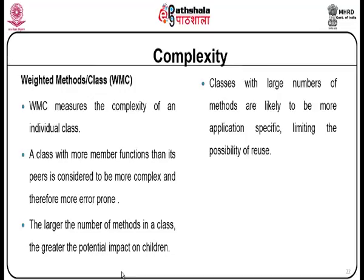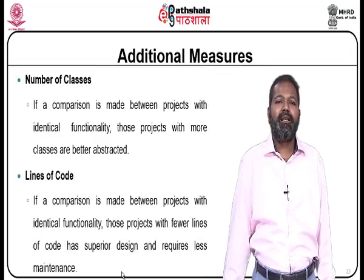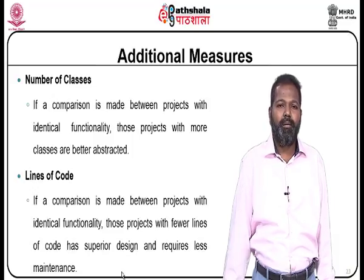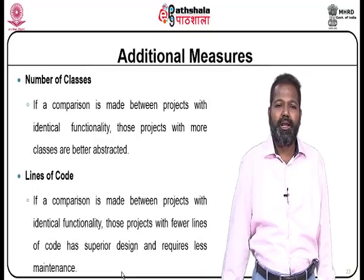The larger the number of methods in a class, the greater the potential impact on children. Classes with large numbers of methods are likely to be more application-specific, limiting the probability of reuse. Additional measures: number of classes — if a comparison is made between projects with identical functionality, those with more classes are better abstracted. Lines of code — if a comparison is made between projects with identical functionality, those with fewer lines of code have superior design and require less maintenance.